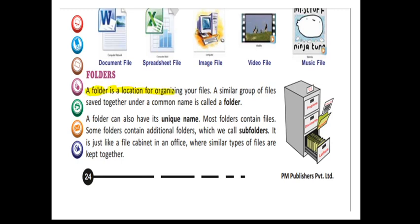So what is a folder? A folder is a location where we organize our files. A group of files can be stored together under a common name called a folder. That means different document files go in a separate documents folder, all music files in a separate folder. Folders must also have unique names, otherwise there will be duplicate copies of different folders.